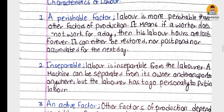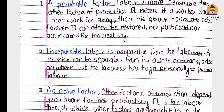Labor is inseparable from the laborer. A machine can be separated from its owner and transported anywhere, but the laborer has to go personally to put in the labor. Physical or mental labor is inseparable from the person — for example, if you have a talent, that talent stays with you. This makes labor an inseparable factor of production.